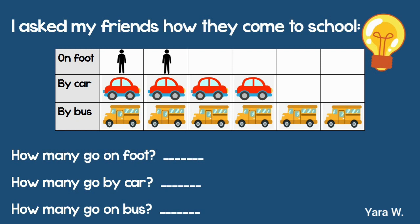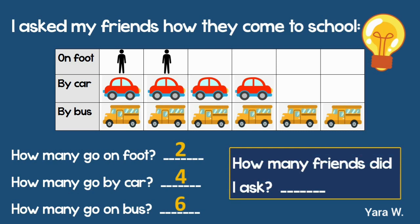Look at the table. Let's answer the questions: How many friends go on foot? How many go by car? And how many go by bus? And finally, how many friends did I ask in total? I want to know the total number of friends who answered the question. If I count all the friends who answered, I will find that they are 12.